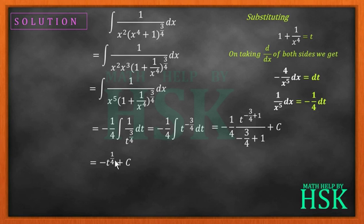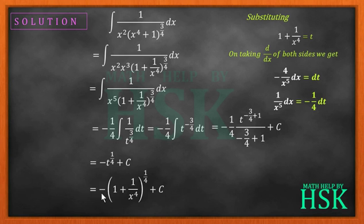On simplifying, the minus 1 upon 4 and the 1 upon 4 obtained from solving these two terms are going to cancel out, so I'm going to get minus t to the power of 1 by 4 plus c. On replacing the value of t in terms of x, I get the final answer as minus of 1 plus 1 upon x to the power of 4, whole to the power of 1 upon 4, plus c.